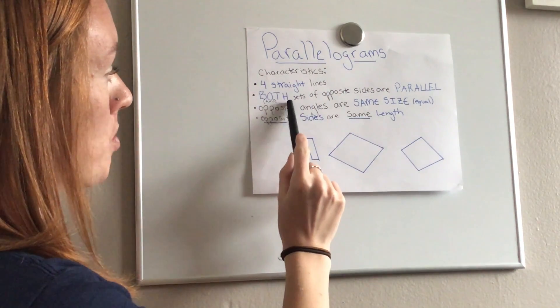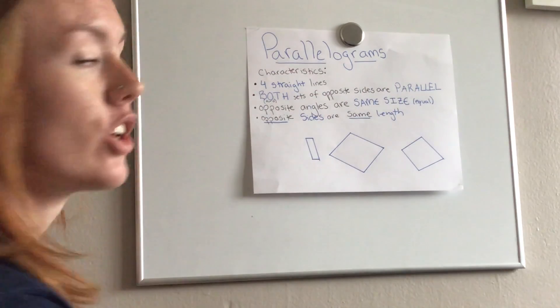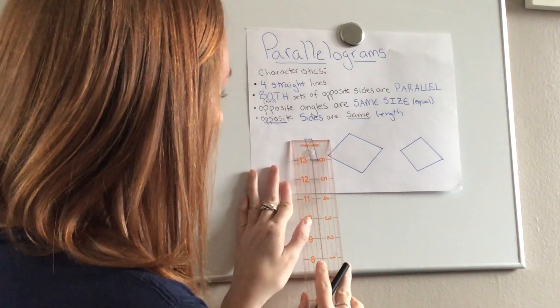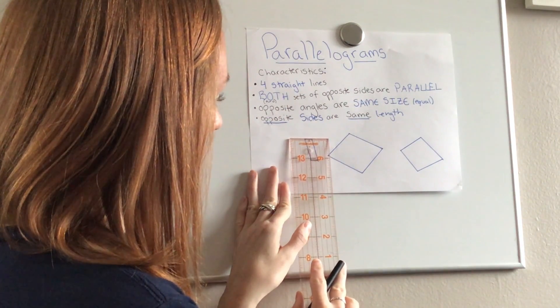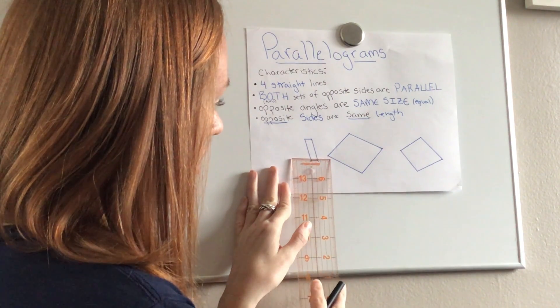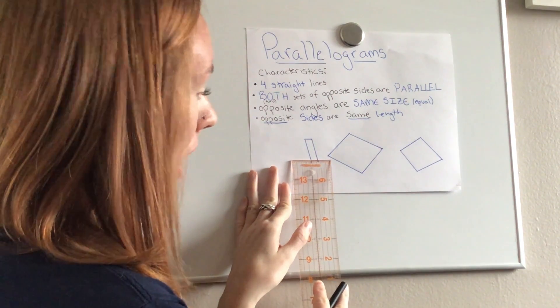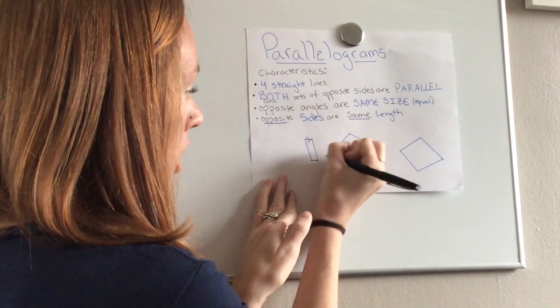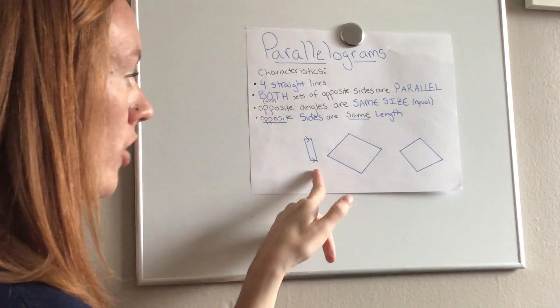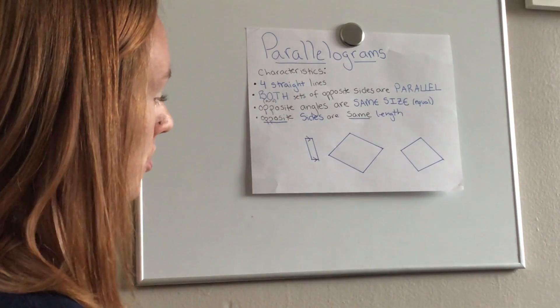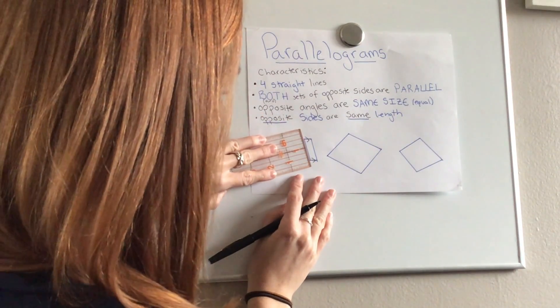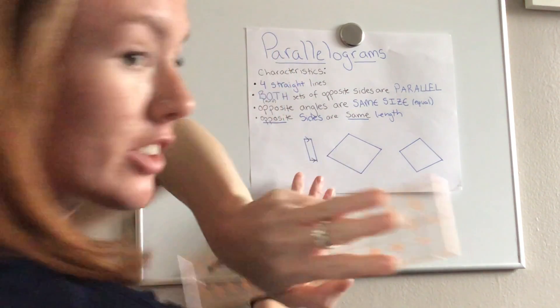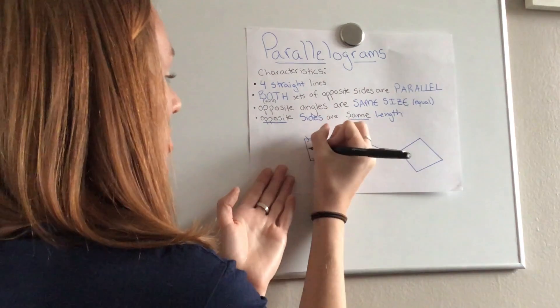Now this one says both sets of opposite sides are parallel, so let's check for parallel using our straight edge. We line it up, opposite would be all the way across, and it perfectly matches. So the top and the bottom of this structure right here are parallel. Remember we show it with an arrow.